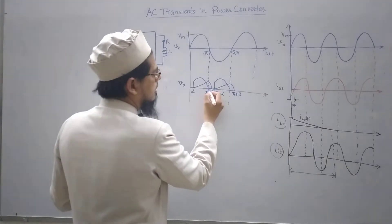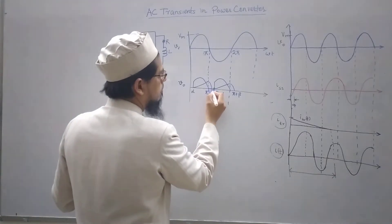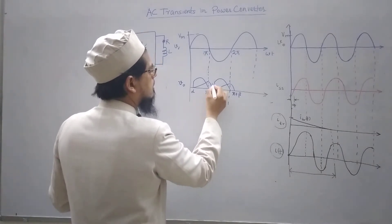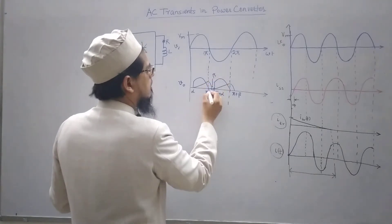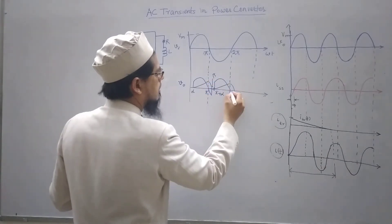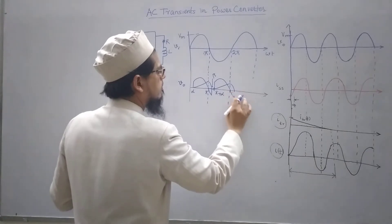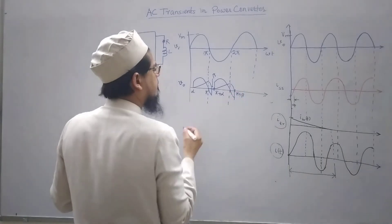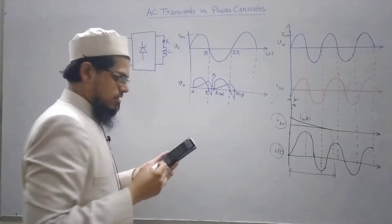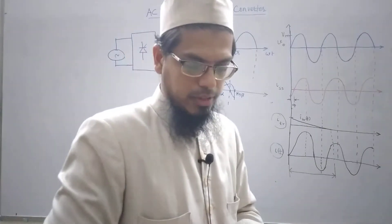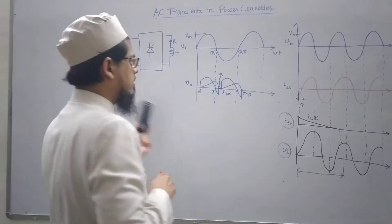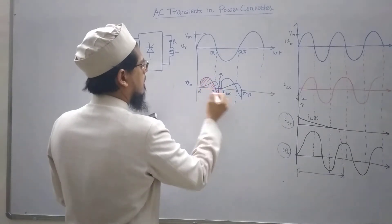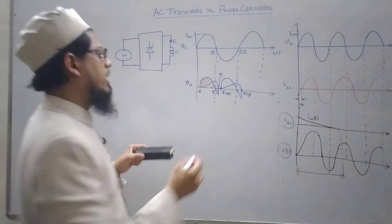Beta to pi plus alpha and I should extend this waveform here also. The output voltage, so this is beta would look like this, similarly here also, pi plus beta. So output voltage is this and similarly here also.